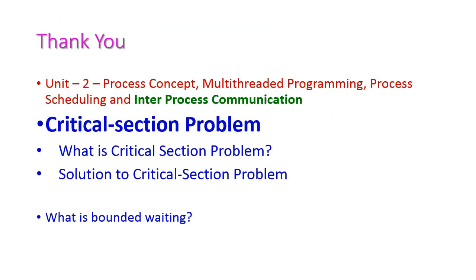Up to this, we have seen the critical section problem — what it is and the three requirements for its solution: mutual exclusion, progress, and bounded waiting. These fall under inter-process communication. This is question time: students, please write the answer for 'what is bounded waiting' in the comment box. In the next class, we will see another software solution for this critical section problem. Thank you.